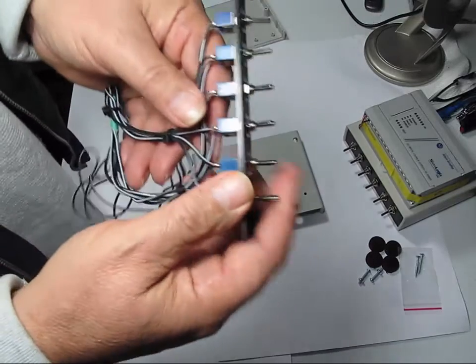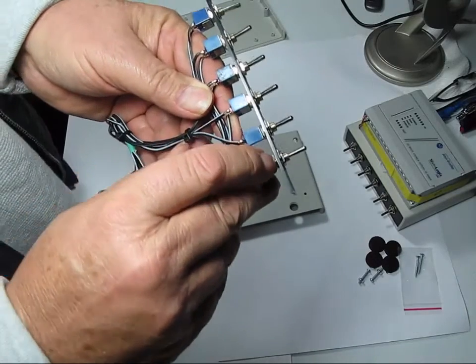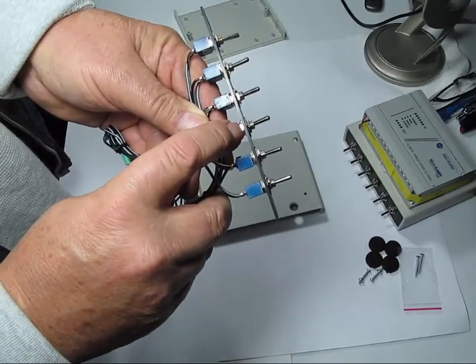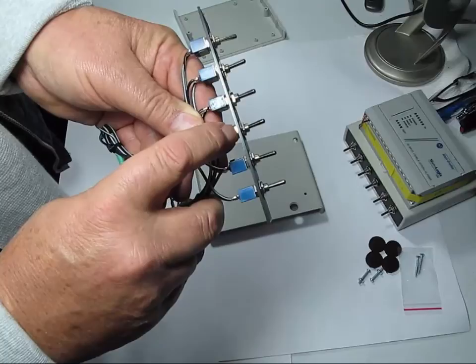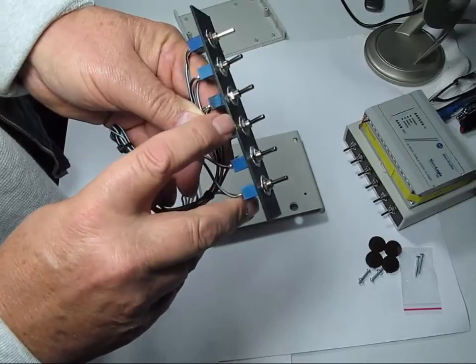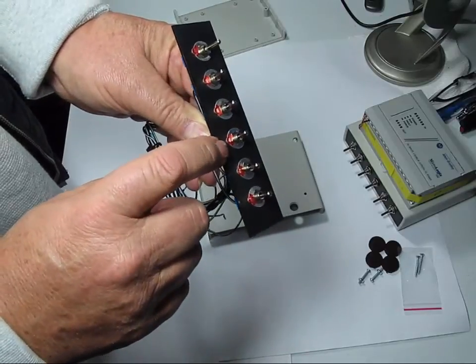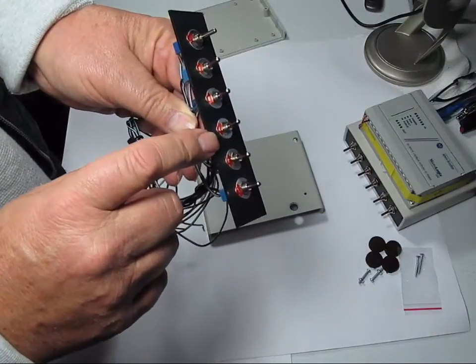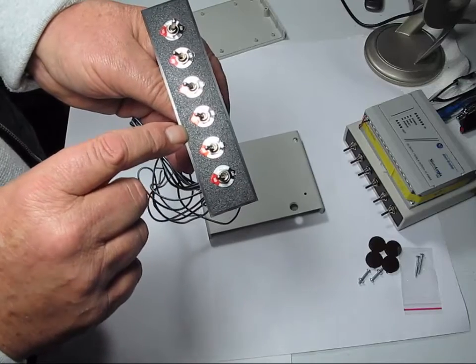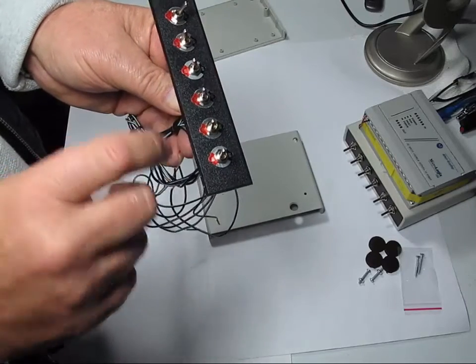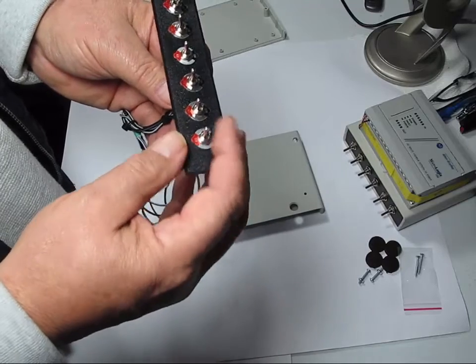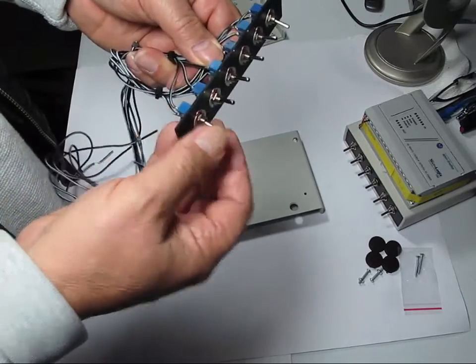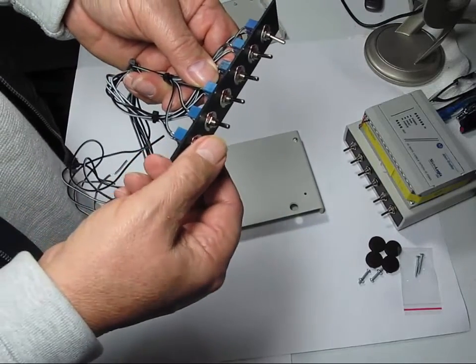I mentioned that we leave one nut on the switch and we tighten it down with a wrench, not reef it down, just snug. Not all of the switches that we send out have the on and off switch plates. They're really not necessary because we typically wire them so the on is on the top, so that down is off and up is on.